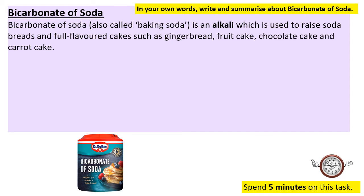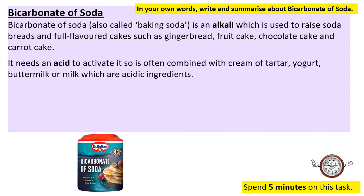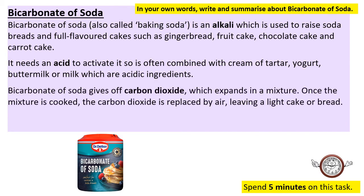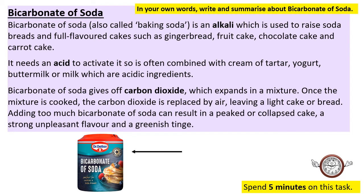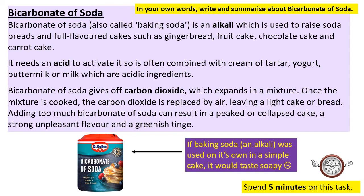Bicarbonate of soda is an alkali used to raise soda breads and full-flavored cakes like gingerbread, fruit cake, chocolate cake, and carrot cake. It needs an acid to activate it — this acid comes in the form of yogurt, cream of tartar, buttermilk, milk, or lemon juice. Bicarbonate of soda gives off carbon dioxide, which expands in the mixture; once cooked, the CO2 is replaced by air, leaving the cake or bread light. Adding too much bicarb can result in a peaked or collapsed cake, an unpleasant strong flavor, and a greenish tinge. Research and write a summary in your own words.